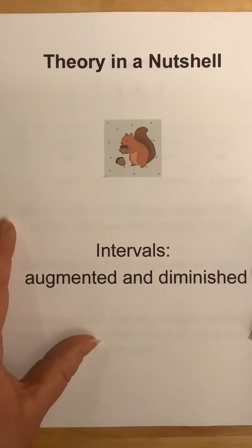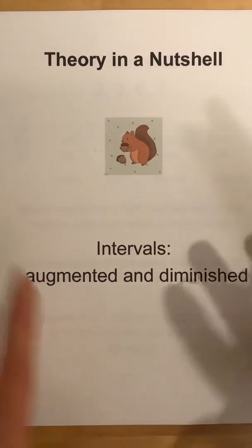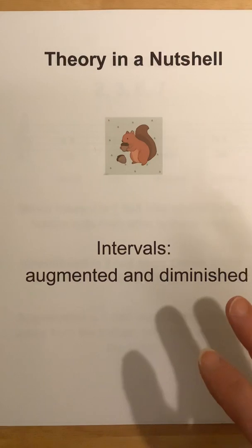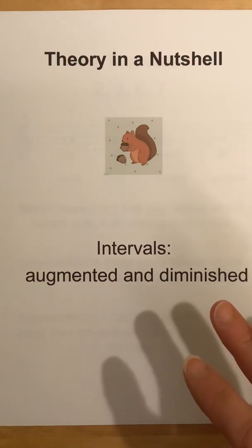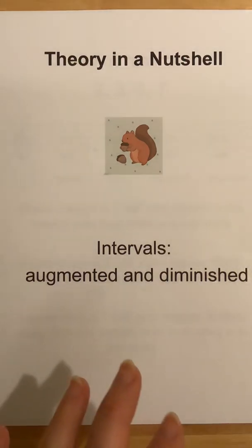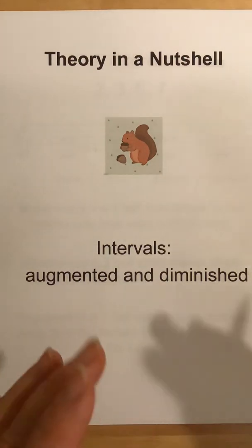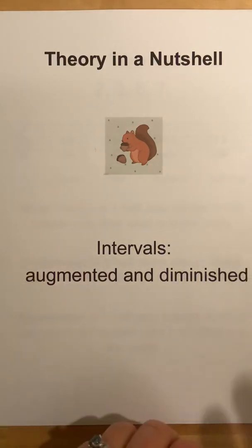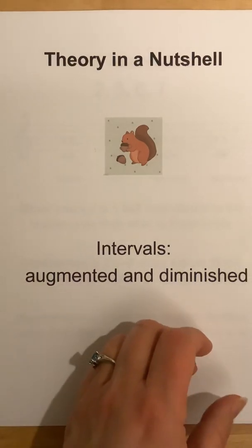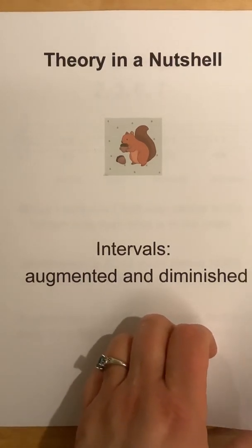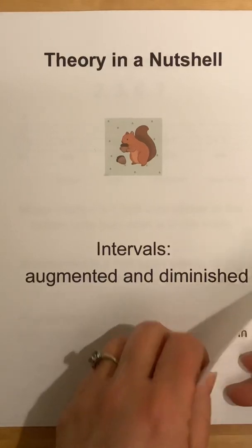Theory in a Nutshell: Intervals, Augmented and Diminished. This is more the intermediate level of rudiments. At the beginner level, we talk about the major, minor, and perfects. And now we're going to add the augmented and diminished intervals. If you're doing RCM theory, this would start at level 6.